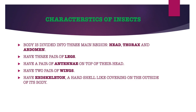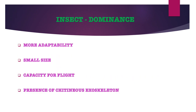Insects have an exoskeleton — a hard shell-like covering on the outside of their body. Insects are the most dominant species on Earth, as they originated before human beings appeared. There is a large number of individuals of a single species, more number of species, and they occupy a great variety of habitats. There are several structural, morphological and physiological factors responsible for their dominance.